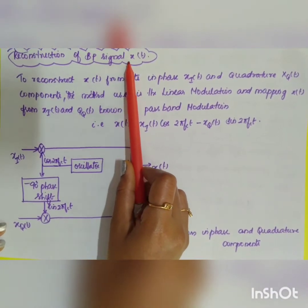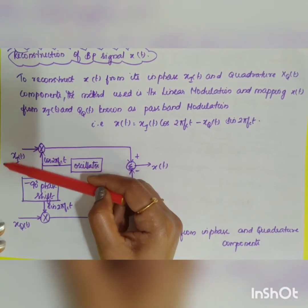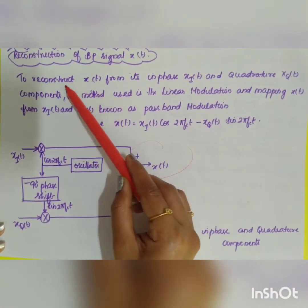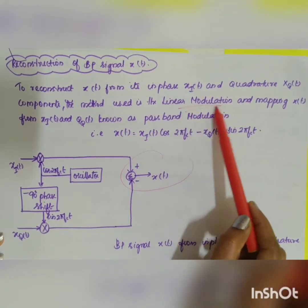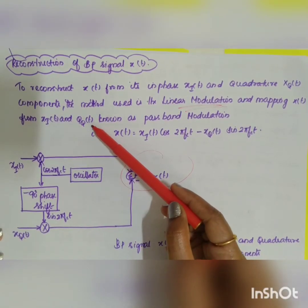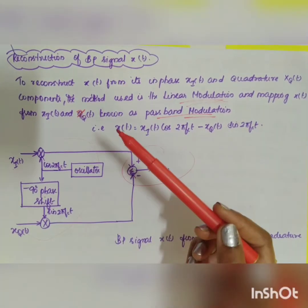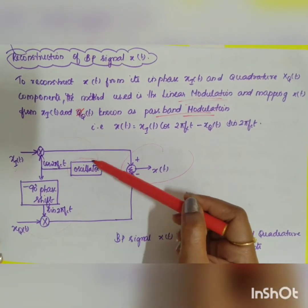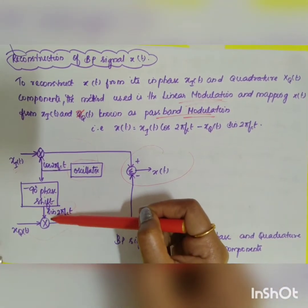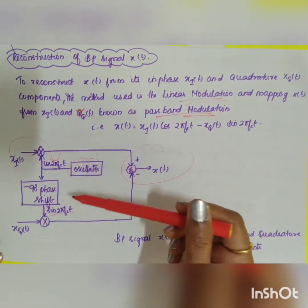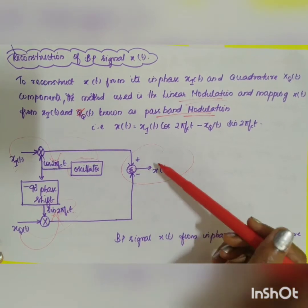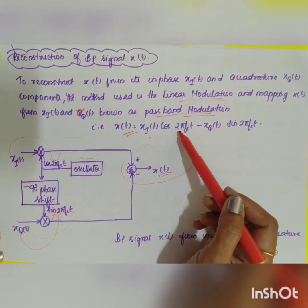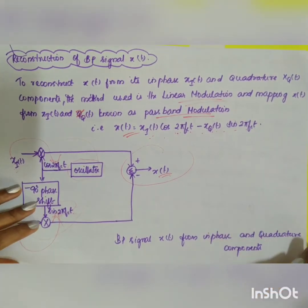To reconstruct x(t) from the in-phase and quadrature components, we use linear modulation — known as passband modulation. xI(t) is multiplied by cos(2πfc·t) from a local oscillator, and xQ(t) is multiplied by sin(2πfc·t) from a 90-degree phase shifter. The two products are summed to give x(t) = xI(t)·cos(2πfc·t) − xQ(t)·sin(2πfc·t).